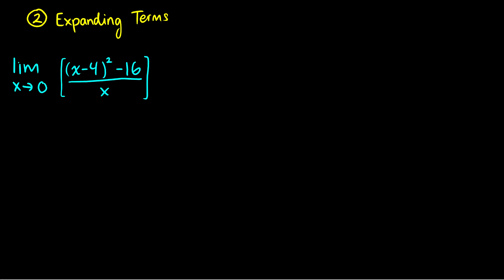Another method like factoring is just to expand terms. Here we have x minus 4, all squared, minus 16 over x, and we want the limit as x goes to 0. We can't just plug in x equals 0 because then we're dividing by 0 again. So we'll have to do some expanding — if we expand x minus 4 squared, maybe we'll be able to find something to cancel and get rid of that x on the bottom.